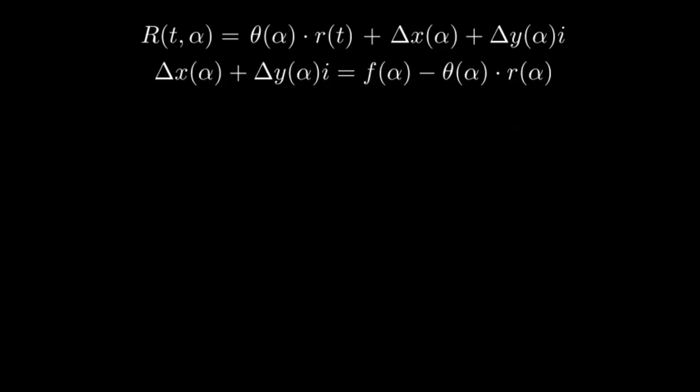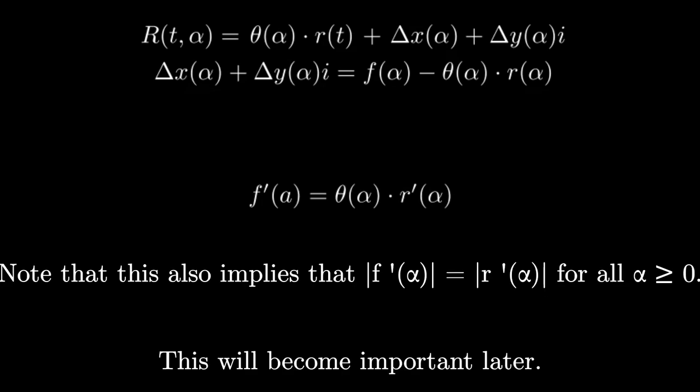Next, we know that the tangent vectors must be equal for both f and big R at the point of tangency. But since all that matters is that the tangents have equal magnitudes and directions, we can ignore the translation component of big R and treat the function as if it just rotates R. We can use this information to solve for the complex number responsible for rotating the rolling curve.